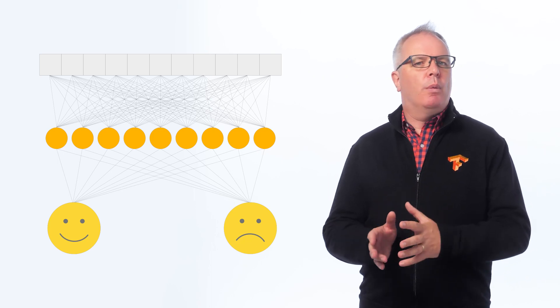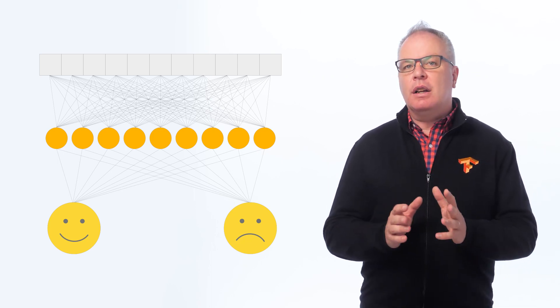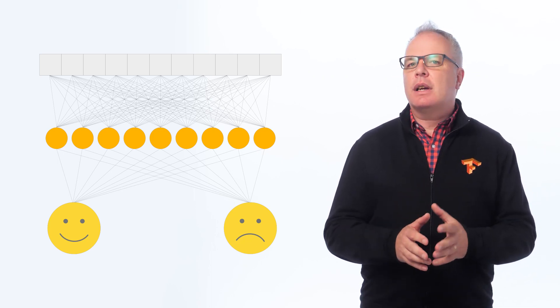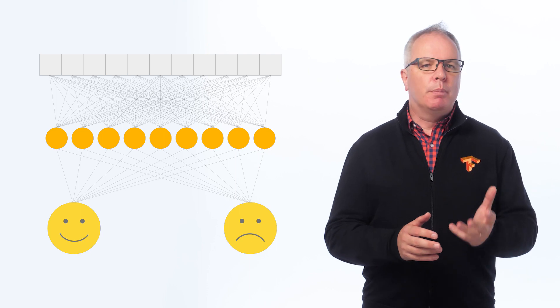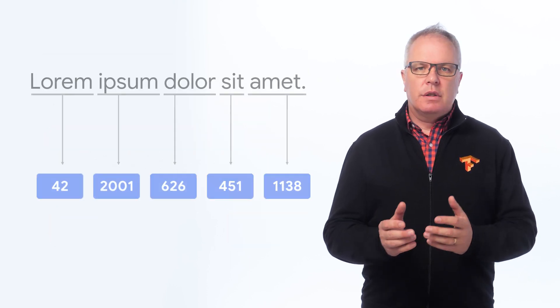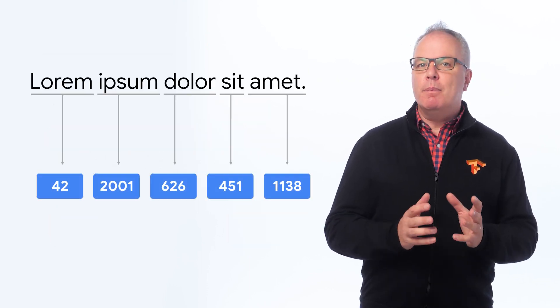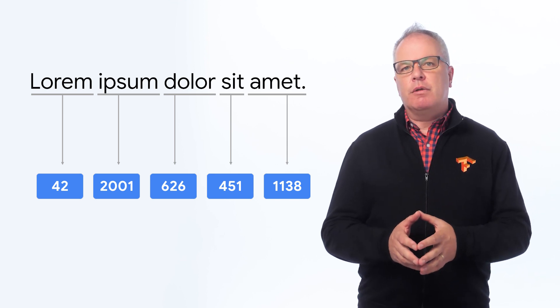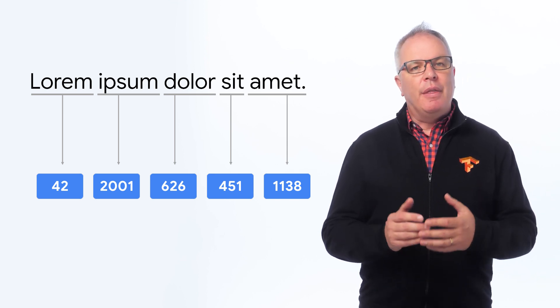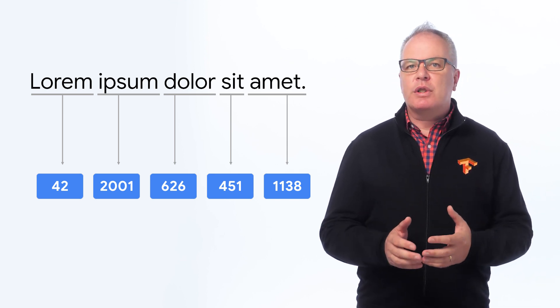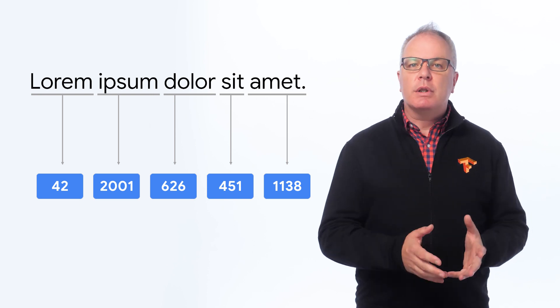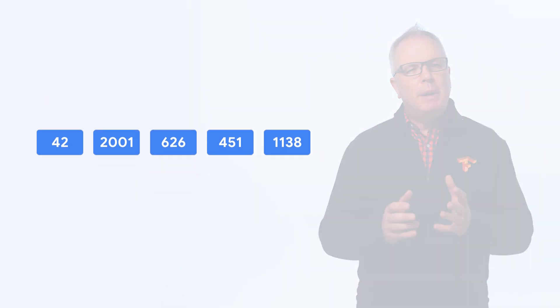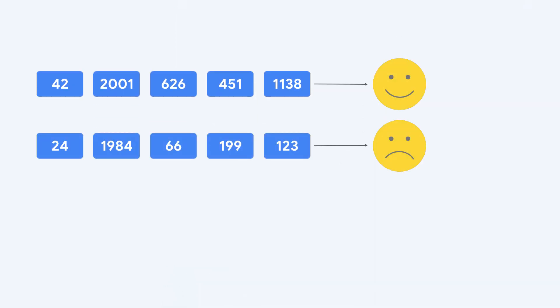Neural networks typically deal with numbers and not text when learning patterns that can be used for prediction or classification. In this case, we're looking at learning from movie reviews to see if those reviews are positive or negative. The first step is to change the words into numbers that represent them. There'll be a little bit more processing of these words into vectors determining their sentiment, and we'll cover that in the next video. So let's get coding first.